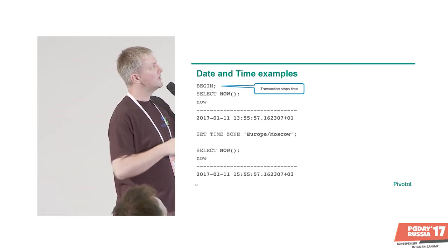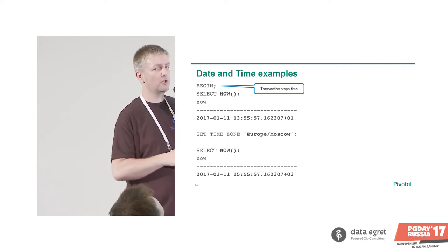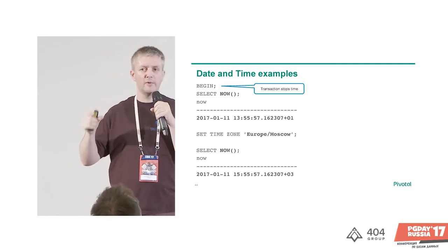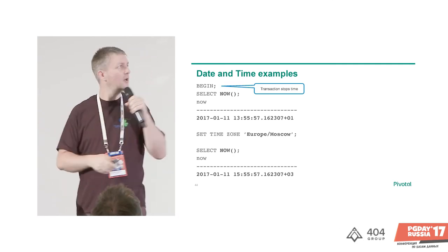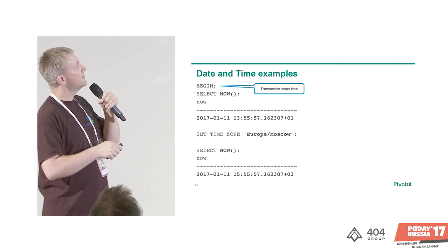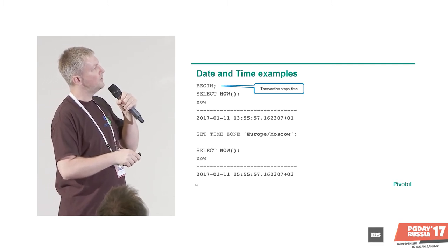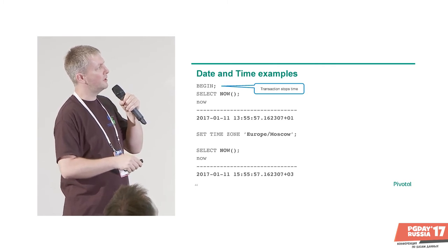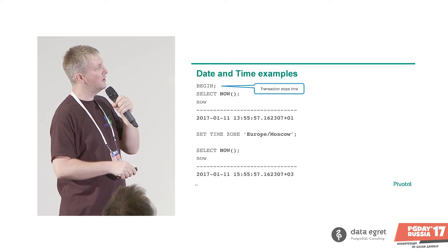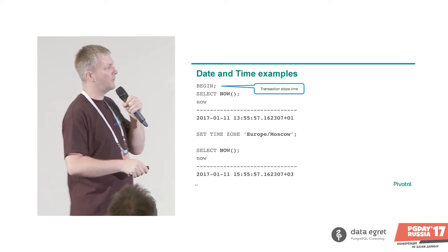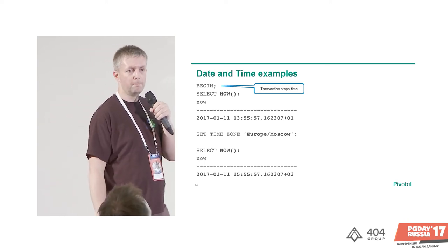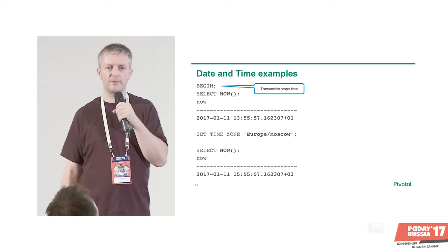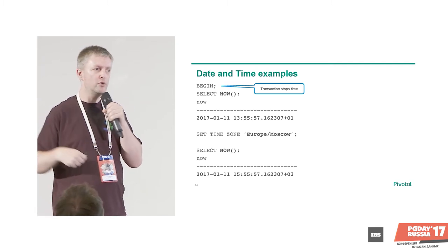Within a transaction in Postgres, time stops — if you call SELECT NOW() multiple times you always see the same time. You can SET TIME ZONE inside a transaction to switch time zones: selecting NOW() shows 1:55, then after switching to Moscow it shows 3:55. Postgres calculated the timestamp into the new time zone. But this approach is a bit complicated — you have to start a transaction, set the time zone, and remember to reset it afterwards.